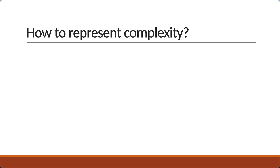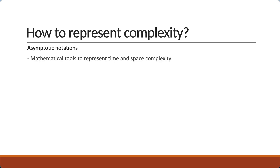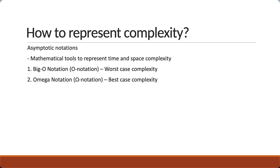Now that we have an idea of what time and space complexity are, the next question is how do we represent them? We do that using asymptotic notations — mathematical tools to represent time and space complexity. There are mainly three asymptotic notations: Big O notation for worst case complexity, Omega for best case complexity, and Theta for average case complexity.